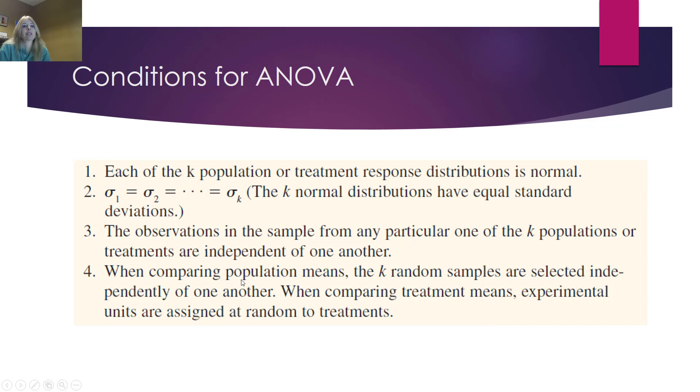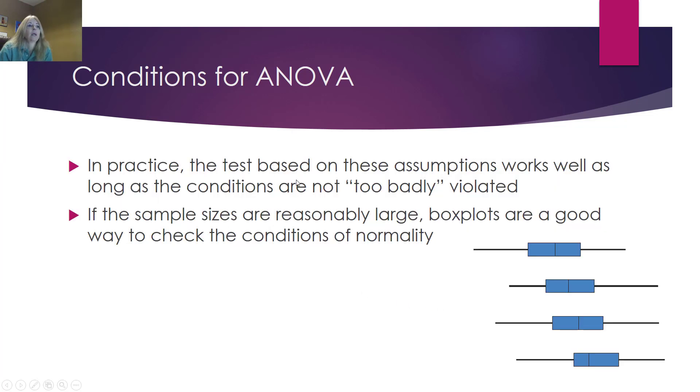We have conditions, as we do for every test, that each of the populations must come from a normal distribution. The variances or standard deviations should all be equal. We know they're not going to be exactly equal, but we shouldn't have a huge spread like that last example. And the observations are independent, independent of one another.